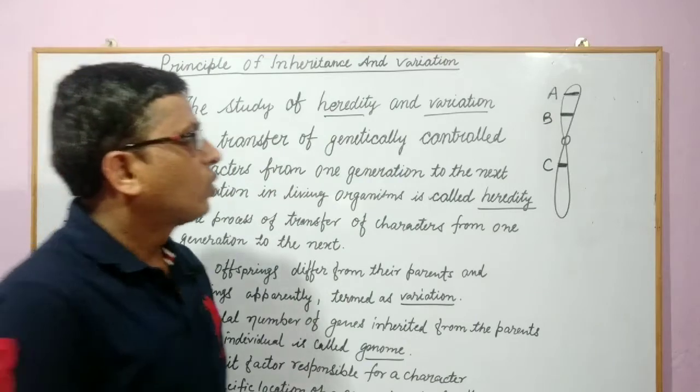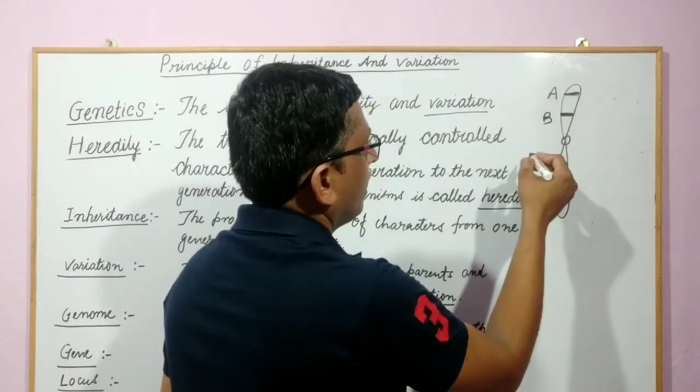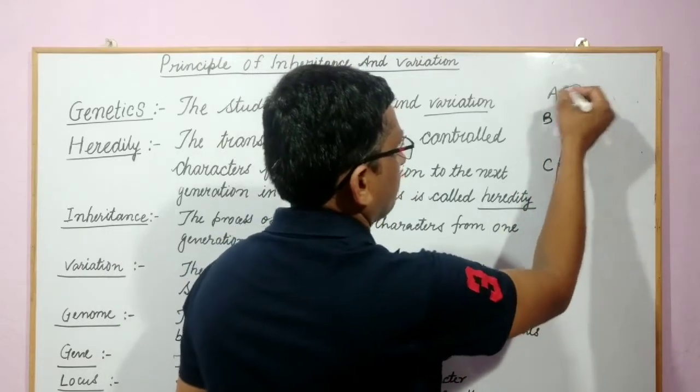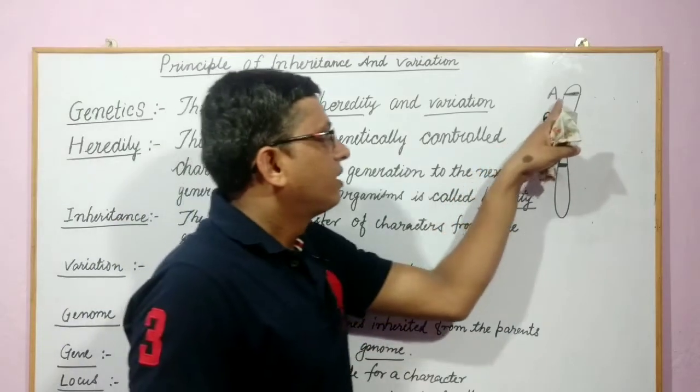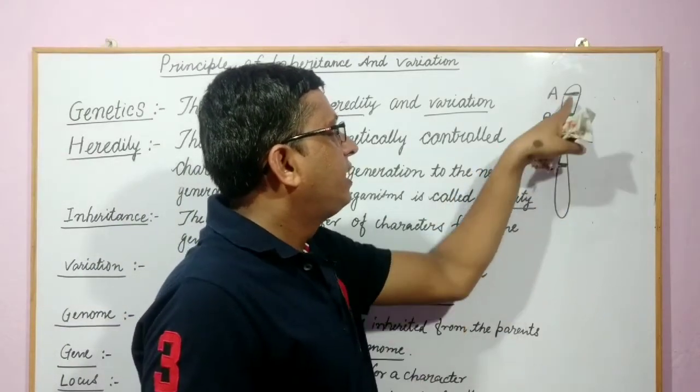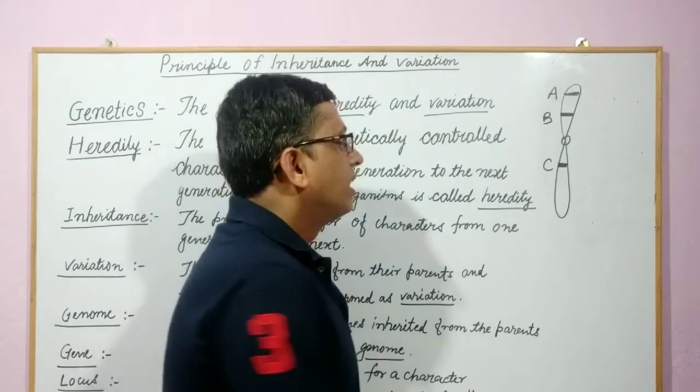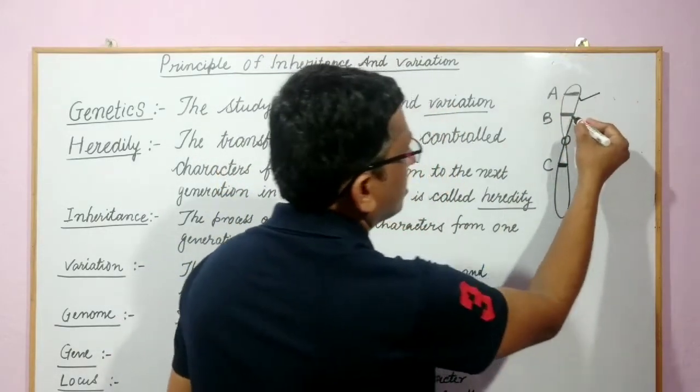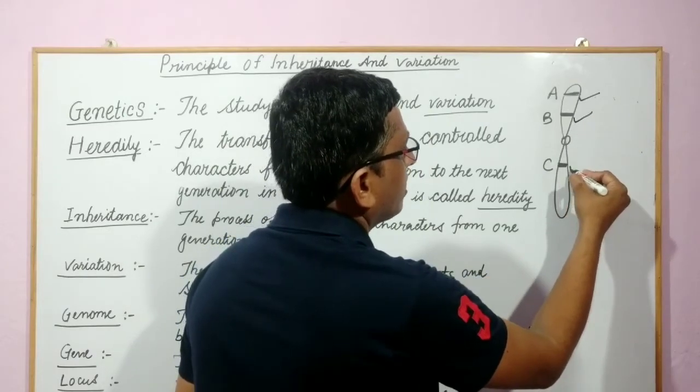So, these are the different positions of genes in this chromosome. And this particular location of gene A, B, C. These are the different loci of these genes. This is the locus for gene A. This one is the locus for gene B and this one is the locus for gene C.